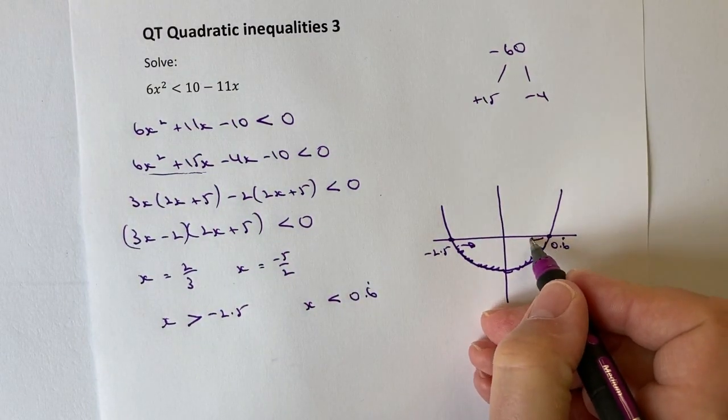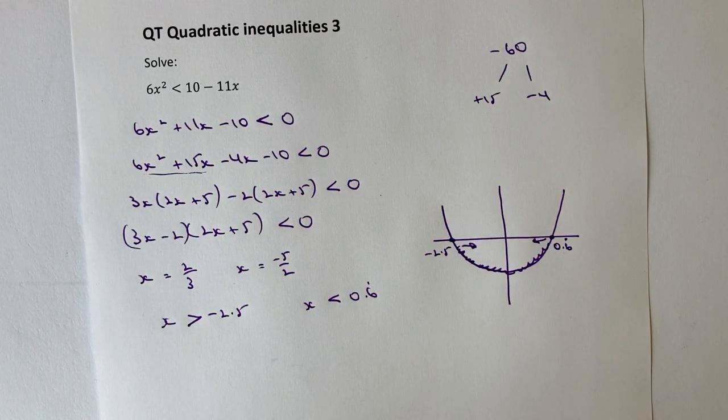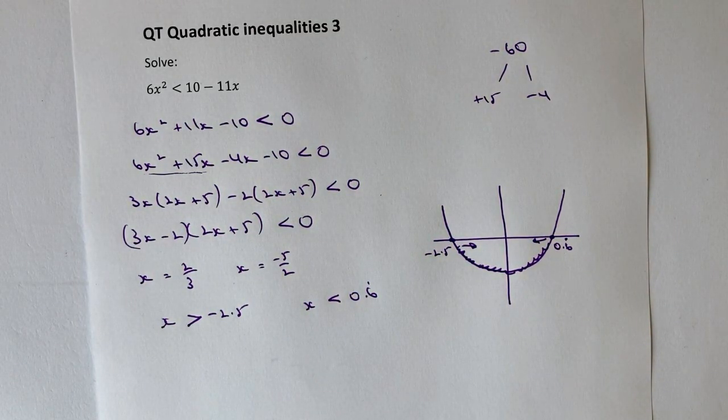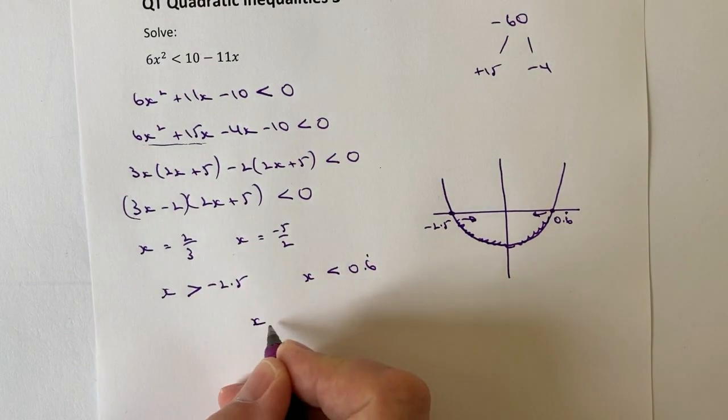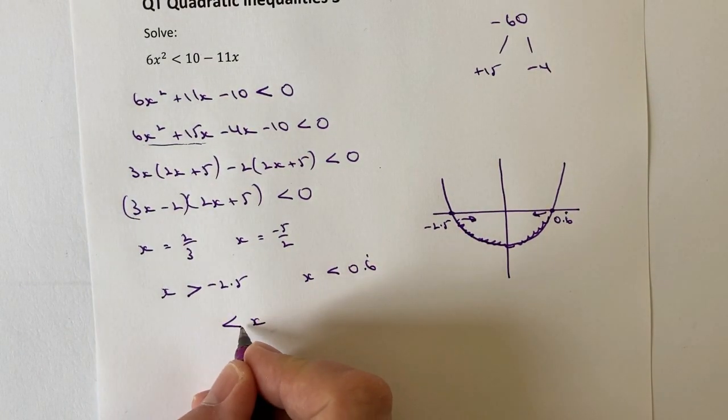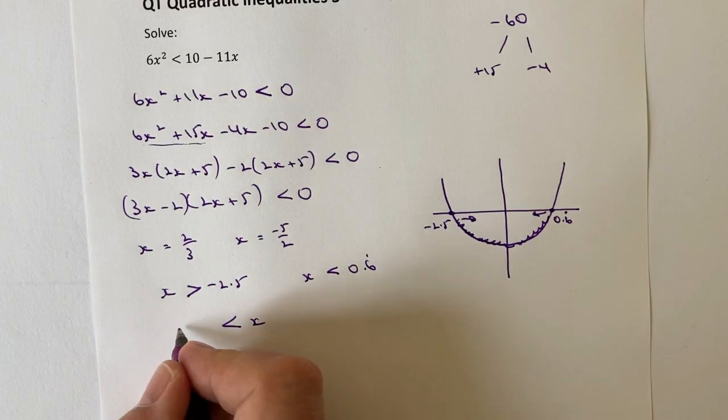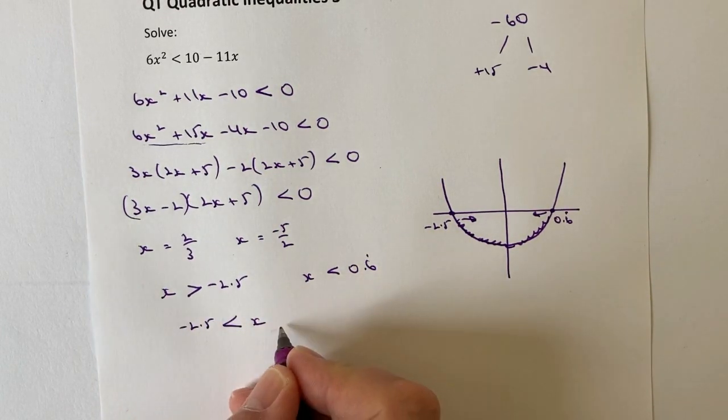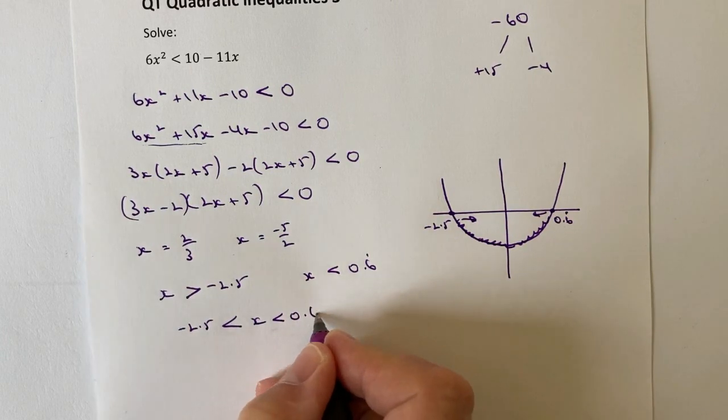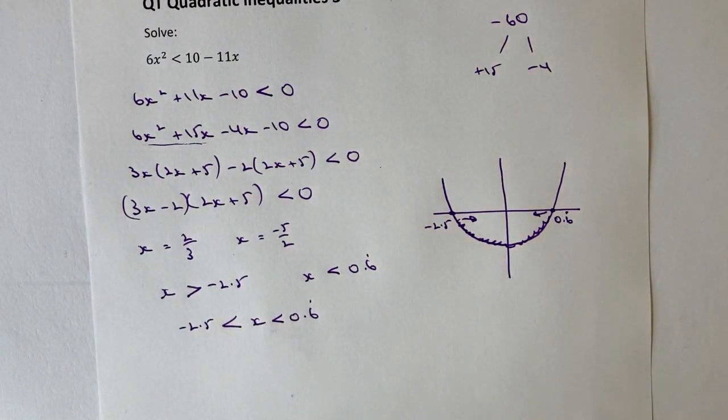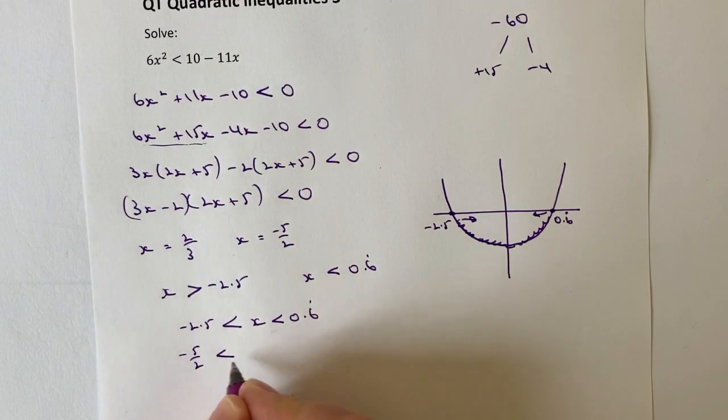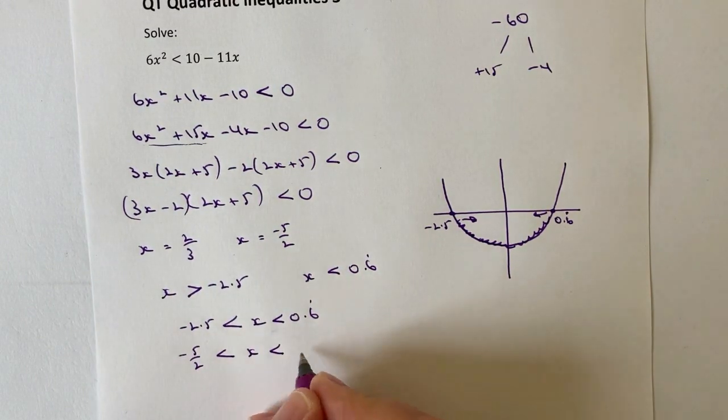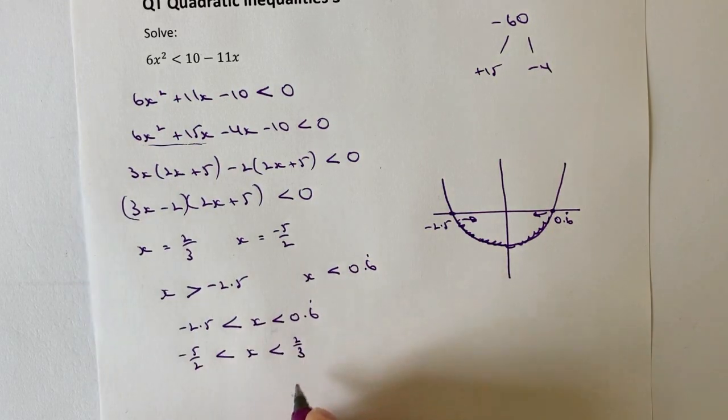So, I could write it like that if I wanted to, or sometimes you might see it written where we put x in the middle and we say that x is greater than minus 2.5 and is less than 0.6 recurring. Or we could write that as the fraction, which is going to be minus 5 over 2 is less than x, which is less than 2 thirds. And both answers are absolutely correct.